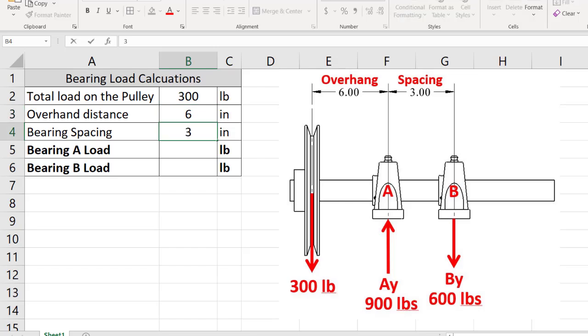The load on bearing A, if you remember, was equal to this times its leverage distance divided by this leverage distance. And the load on bearing B was simply equal to the sum total of the load on the pulley and the load on bearing A. That's where we got our 900 pounds.